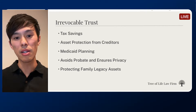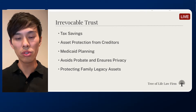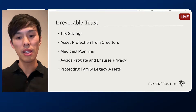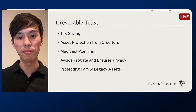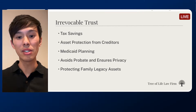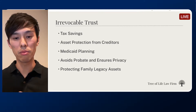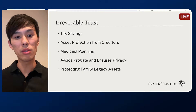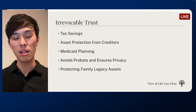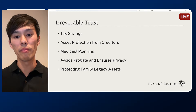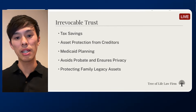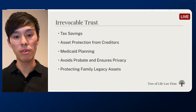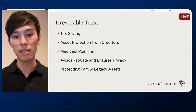Irrevocable trusts are also a very useful tool for Medicaid planning. If you transfer assets into an irrevocable trust well before applying for Medicaid, those assets will not be counted towards your eligibility. If your assets exceed a certain amount, you don't qualify for Medicaid. Some people move assets into a Medicaid asset protection trust in order to qualify, and when they pass away, to shield their estate from Medicaid recovery — meaning your family does not have to pay back money that was used from the Medicaid program. So that's a legal way to protect your assets.